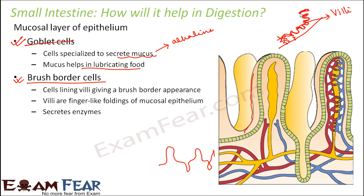On the outer edge of the villi you have some cells which are like very thin structures — they give the appearance of a brush. A brush generally has hair-like structures. The lining of the villi consists of structures called microvilli, which are even thinner and smaller than villi. These microvilli form the brush border and give a brush border appearance, which is why these cells are called brush border cells.